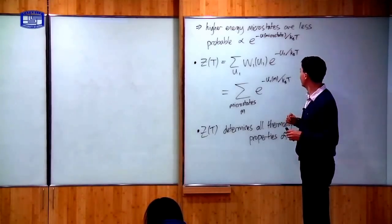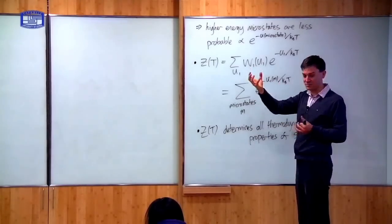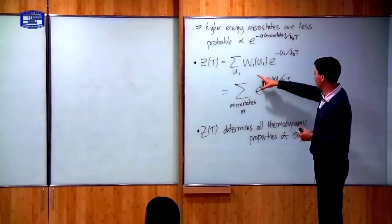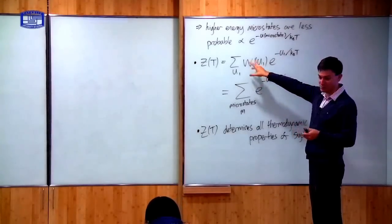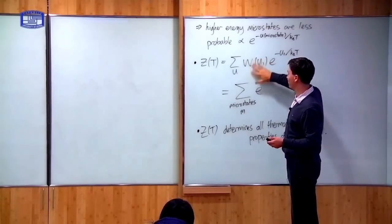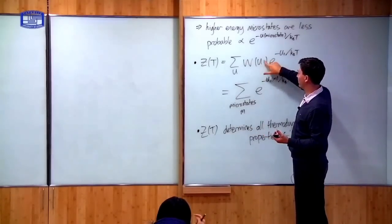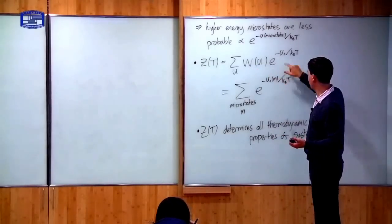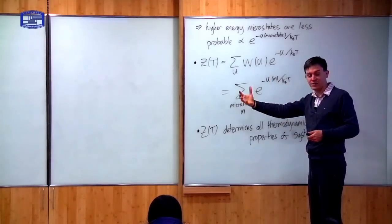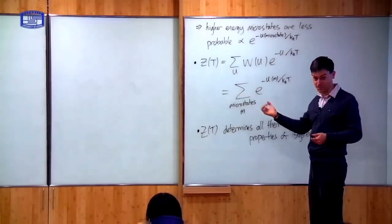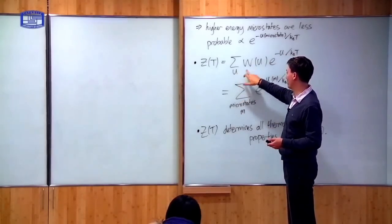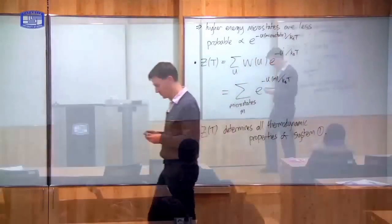Before I do that — we started this theory part by considering system 1, which is the thing we want to understand, connected to a thermal reservoir system 2. But if you look at these equations, you now see that we've got rid of all of the 2s. There's no U2 or W2. So in what follows, I will get rid of the subscript 1 as well. We're only interested in one system, and I'll just call the energy of that system U, and the number of microstates W and so on.